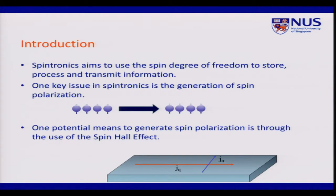One application of spintronics already in the market is the read mechanism found in every hard disk read head. This makes use of the property that a spin-polarized current has a different resistance depending on whether it is flowing into a ferromagnetic material that is magnetized parallel or anti-parallel to the spin polarization of the current. If you have a fixed quantization axis — for example, up or down —